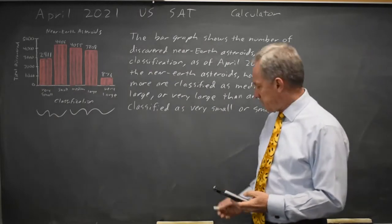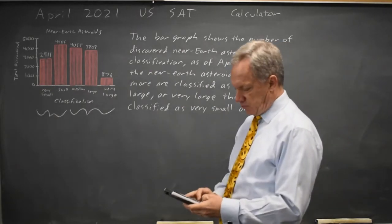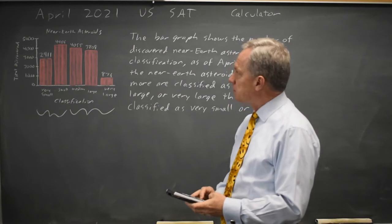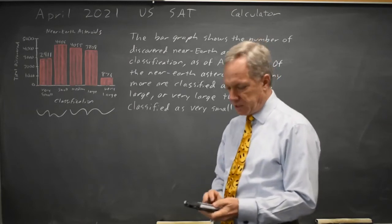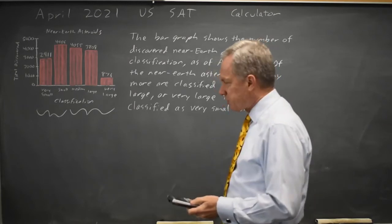So if I total the numbers for medium, large, or very large, that's 4055 plus 3808 plus 876. And we can do this without a calculator, but it's much more efficient with.